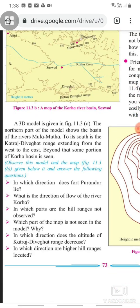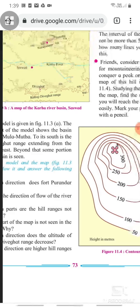What is the direction of the flow of the river Karha? In which parts are the hill ranges not observed? Which part of the map is not seen in the model and why? In which direction does the altitude of Katraj Divighat range decrease? In which direction are higher hill ranges located?